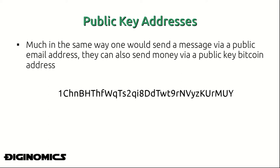Now each public key also holds with it a private key, and the private key is what digitally signs the transaction and authorizes money to be sent from an address. The public key is what is recorded in the blockchain and made publicly transferable whenever somebody makes or receives a transaction — this public key is essentially the address for each Bitcoin wallet.